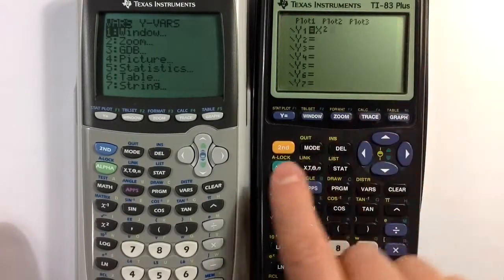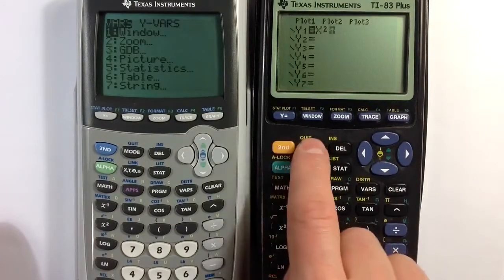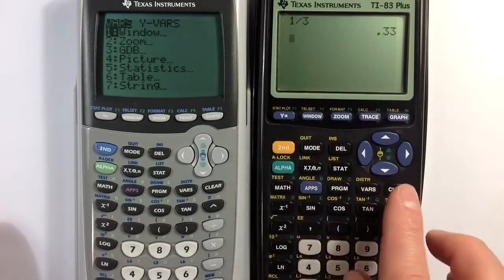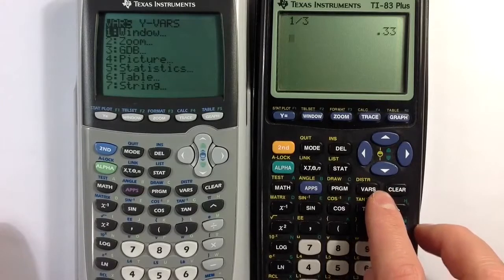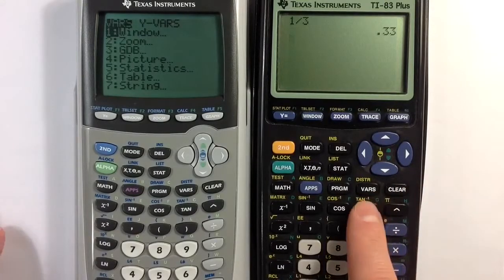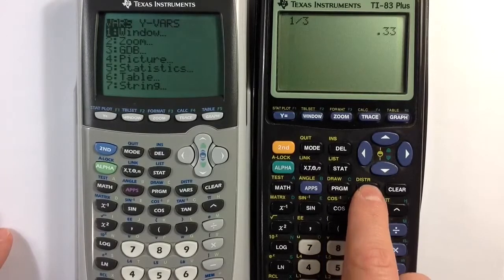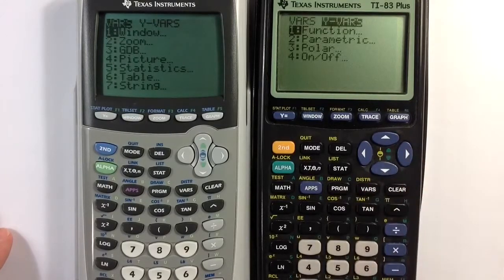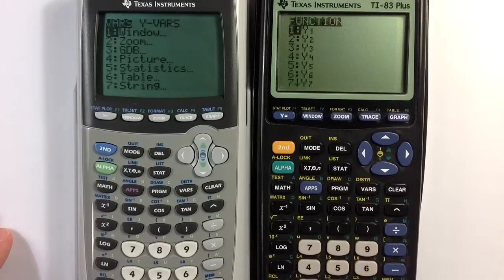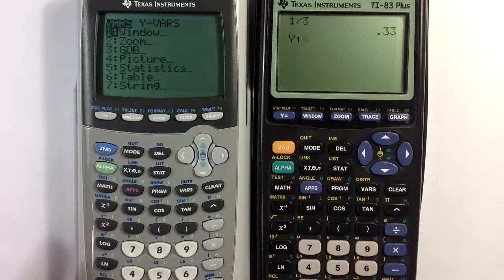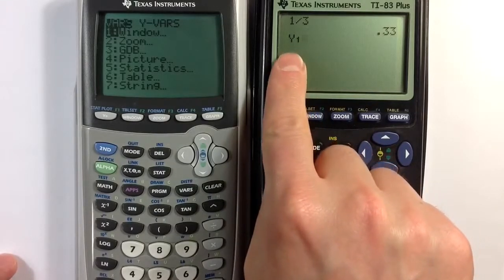I can go to the calculation screen, the home screen, and I can apply that function to a number by referring to it using the vars menu. So if I go to vars and then over to y vars and choose function, I defined a function in y1, and if I want to access that function, if I want to access that command, I can